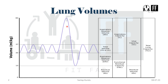Now we will talk about the inspiratory reserve volume. You can see the spike in the curve, which basically signifies forceful inspiration. Inspiratory reserve volume is the additional volume of air that can be inspired forcefully after the end of a normal inspiration. The normal value of this is 3300 milliliters, or 3.3 liters.